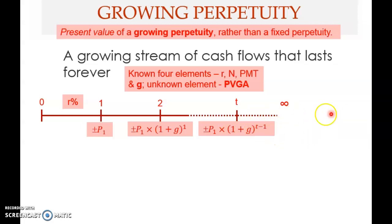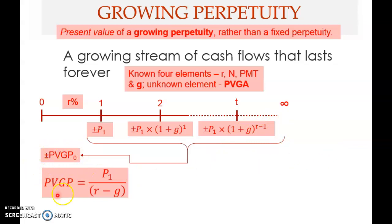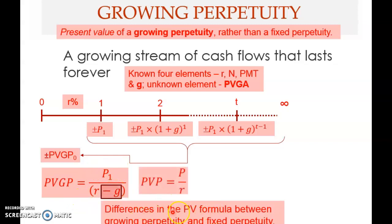We can determine the present value of growing perpetuity, PVGP. There is no future value formula for perpetuity because there is no defined final payment. The PVGP formula simplifies to P1 ÷ (R − G). Comparing this to the fixed perpetuity formula P ÷ R, the only differences are: the denominator becomes (R − G) instead of R, and we use P1 instead of P since payments are growing.